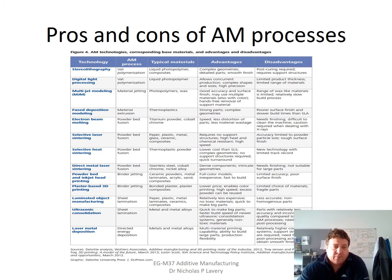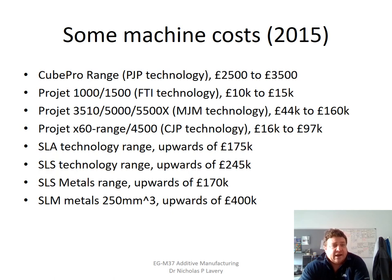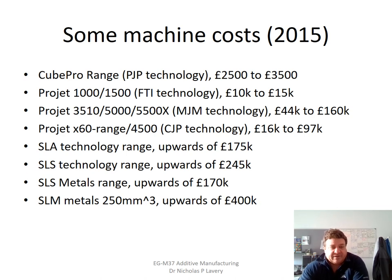If you're interested in the pros and cons of the different processes, go back through the presentation. Looking at approximate costs: at the time, personal printers in the Q Pro range were two thousand five hundred to three thousand five hundred dollars. Project-type machines were ten to fifteen thousand — all of these are plastic-type machines. For metals, selective laser melting systems were up to around $400K, and these costs are thought to be coming down all the time.